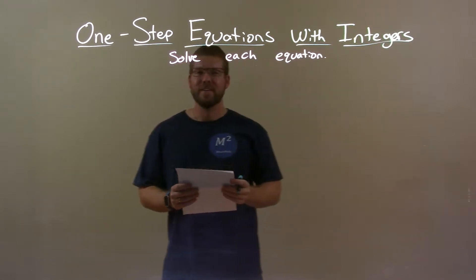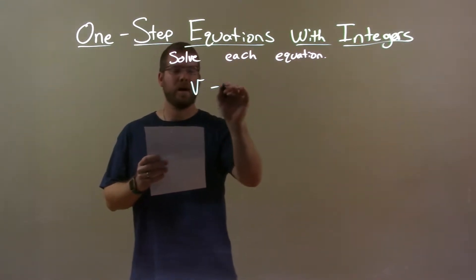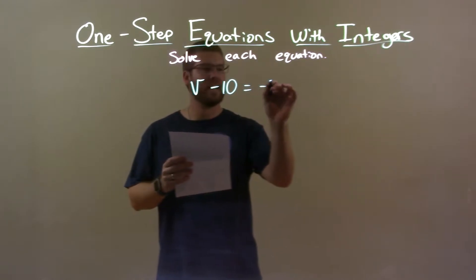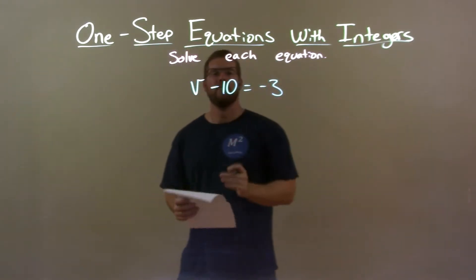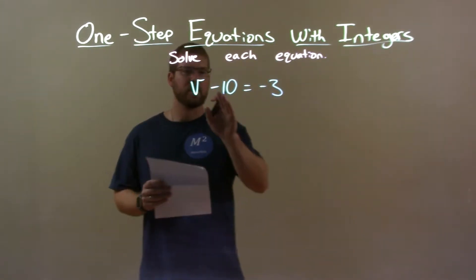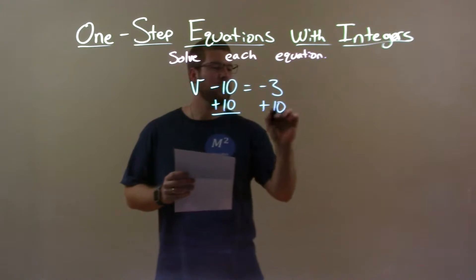If I was given this equation, v minus 10 equals negative 3. Well, we have v minus 10 equals negative 3. Opposite of subtracting a 10 is adding a 10. We want to get v by itself, so I add a 10 to both sides.